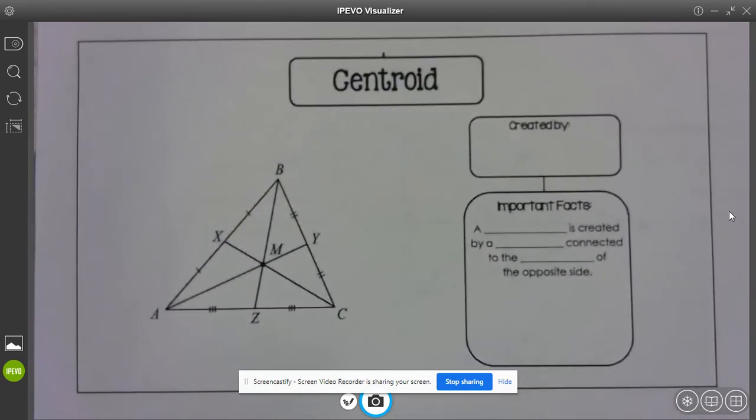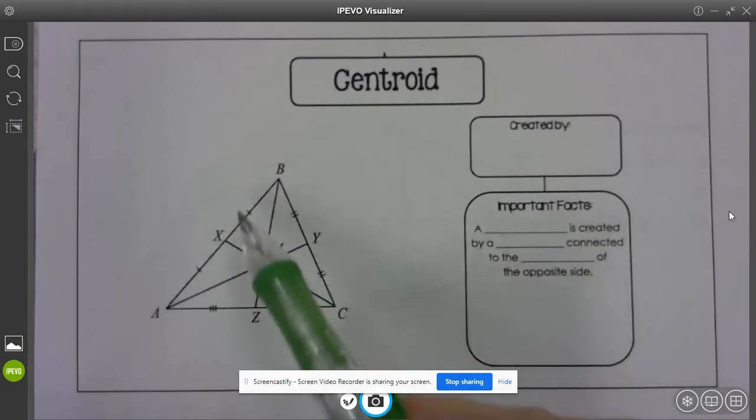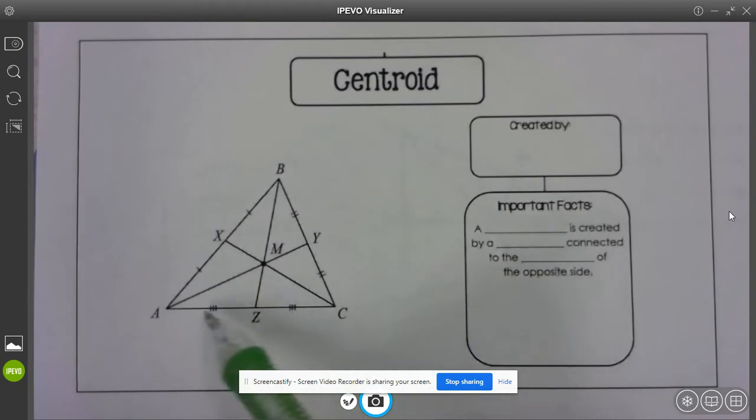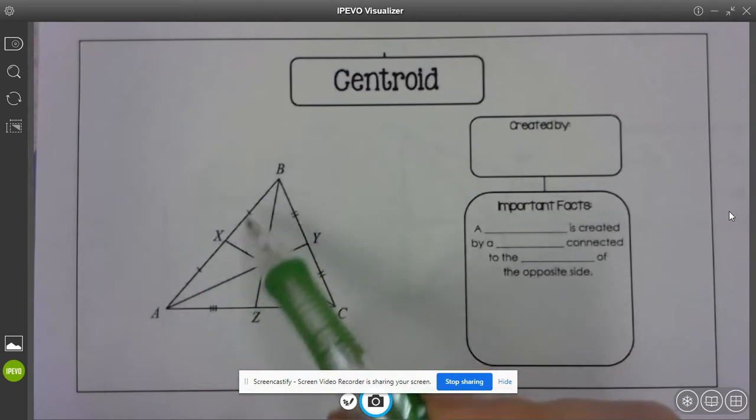Alright, next one is a centroid. Looking here, I have those tick marks on the outside showing that these are congruent, but I don't have the perpendicular sign.